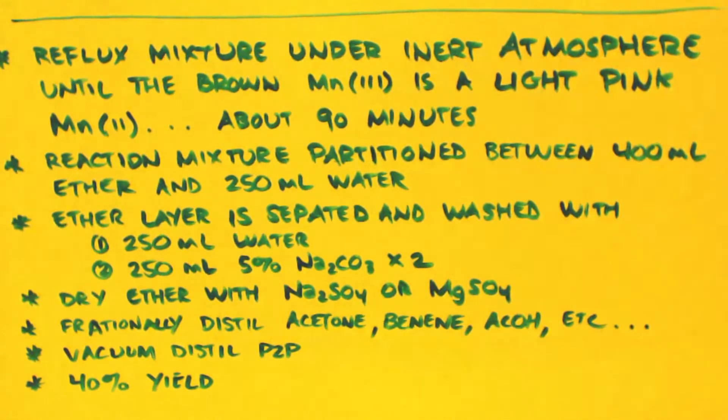Next step is your reaction mixture is partitioned between 400 milliliters of ether and 250 milliliters of water. Basically what that means is you get 400 milliliters of something non-polar like ether and 250 milliliters of water which is polar, mix them with the reaction. It should form two layers. The ether layer with the non-polar layer would have your product in it, so you use a separator funnel and separate off your hydrocarbon.